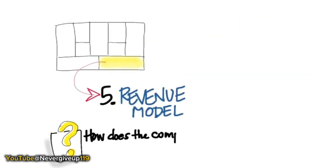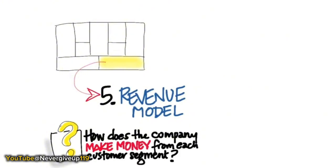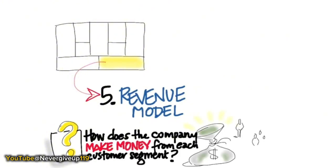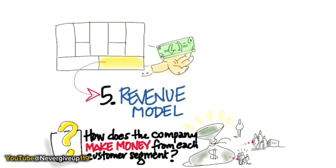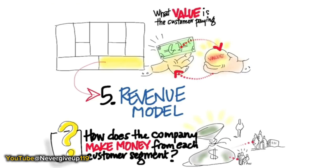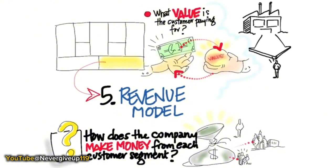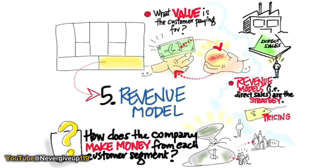Revenue models seems incredibly simple. It answers the question: how does the company make money from each customer segment? But one of the things we always tend to confuse is the difference between a revenue model and pricing — that is, the amount of dollars we might actually charge for the product. What we're really trying to understand first is what value is the customer paying for. Revenue model is our strategy; pricing is our tactics.